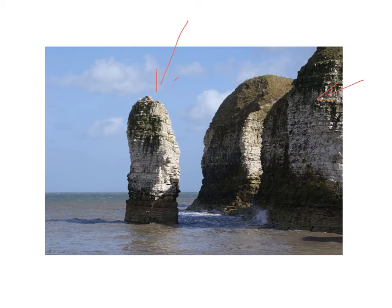And the stack will continue to erode, mostly at the base. We will get some lovely wave-cut notches forming there at high tide due to hydraulic action and corrasion. And the base will get thinner and thinner until the top is too heavy and it will topple over to create at the base a stump.